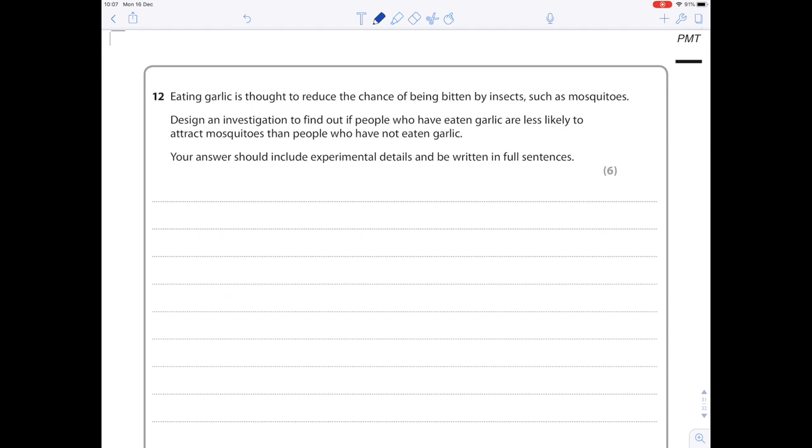As promised, I said I'd go through a CORMS experimental design question. Here it is. Question twelve: Eating garlic is thought to reduce the chance of being bitten by insects such as mosquitoes. Design an investigation to find out if people who have eaten garlic are less likely to attract mosquitoes than people who have not eaten garlic. The answer should include experimental details and be written in full sentences. What did I say? The independent variable, I want to describe the dependent variable, at least three control variables - there's nothing wrong with you writing notes to yourself by the way - time frame and repeat.